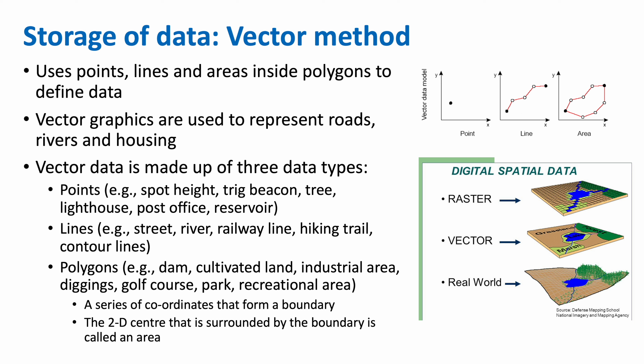The second method is the vector method. The vector method uses points, lines, and areas inside polygons to define data. Vector graphics are used to represent roads, rivers, and housing.